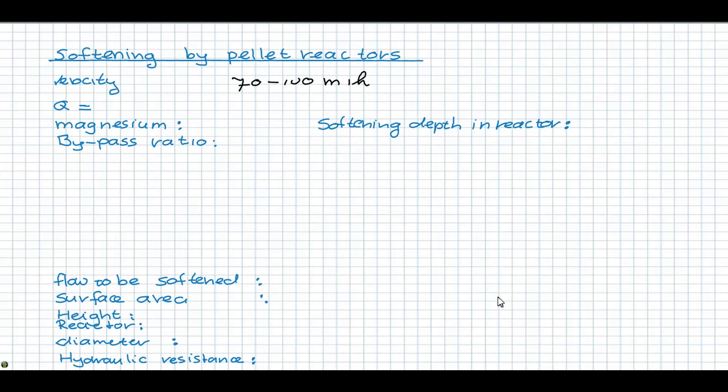Although the total flow is 1000, part of the flow can be bypassed when magnesium concentrations are relatively low. The bypass ratio can be calculated when assuming that the maximum softening depth in the reactor is 0.5 millimole per liter calcium. When the magnesium concentration is 0.25 millimole per liter, and it's not being removed during softening, the maximum bypass ratio can be calculated.